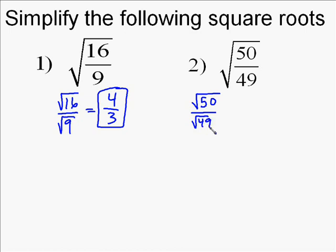As for this one, we break it to square root of 50 over square root of 49. Now, we know the square root of 49, that equals 7, so that part's pretty easy.